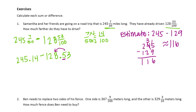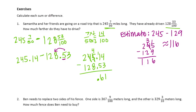And my actual answer: I'm going to do 245 and 14 hundredths minus 128 and 53 hundredths. Decimal point straight down, and we can just subtract. 1 minus 5 — I need to borrow — 11 minus 5 is 6. 4 minus 8 — I've got to borrow — 14 minus 8 is 6. 3 minus 2 is 1, and 2 minus 1 is 1. So I get 116 and 61 hundredths miles left to go.